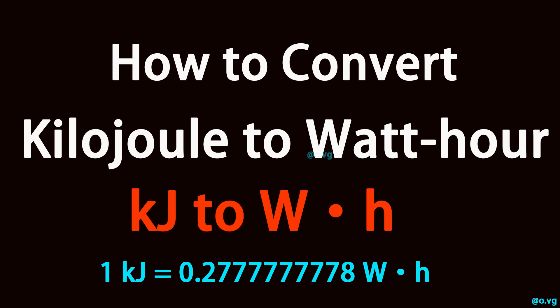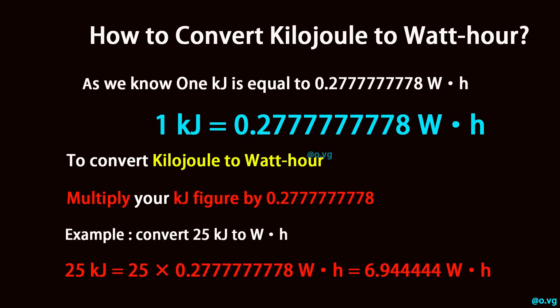How to convert kilojoule to watt-hour. As we know, 1 kilojoule is equal to 0.2777777778 watt-hour. To convert kilojoule to watt-hour, multiply your kilojoule figure by 0.2777777778.